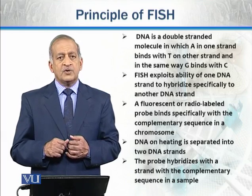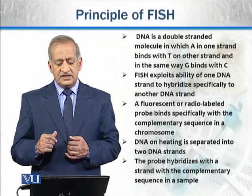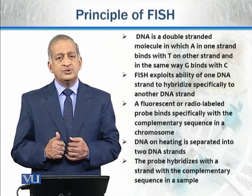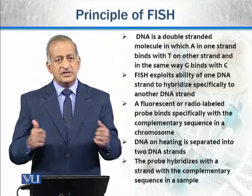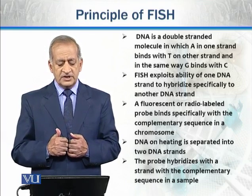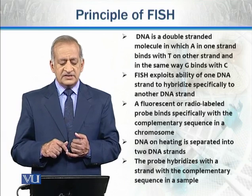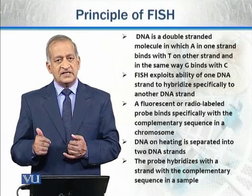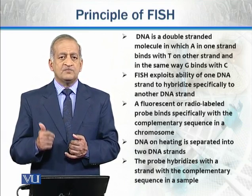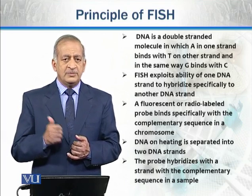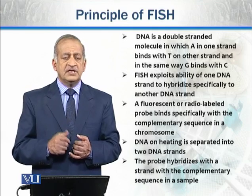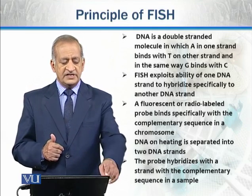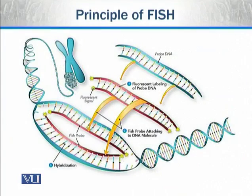When DNA is heated, it is separated into two single-stranded molecules. The probe then hybridizes with the strand containing the complementary sequence in the sample, and when this probe hybridizes with the complementary sequence, we are able to see that particular sequence of DNA. This is shown here in the form of a diagram.